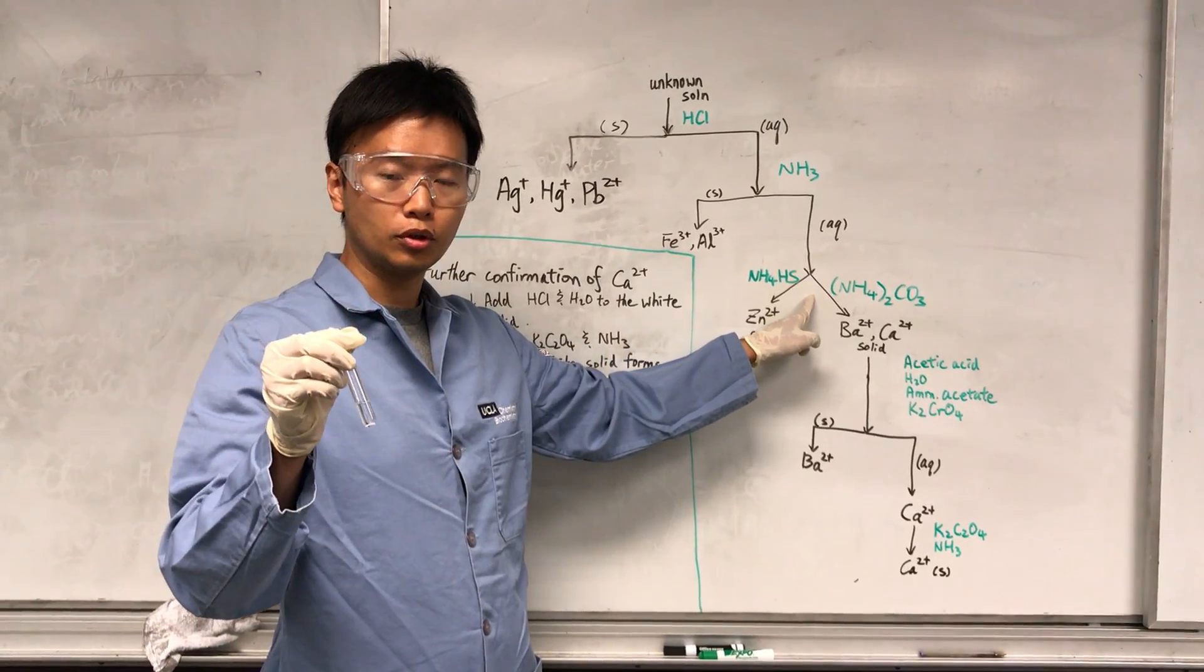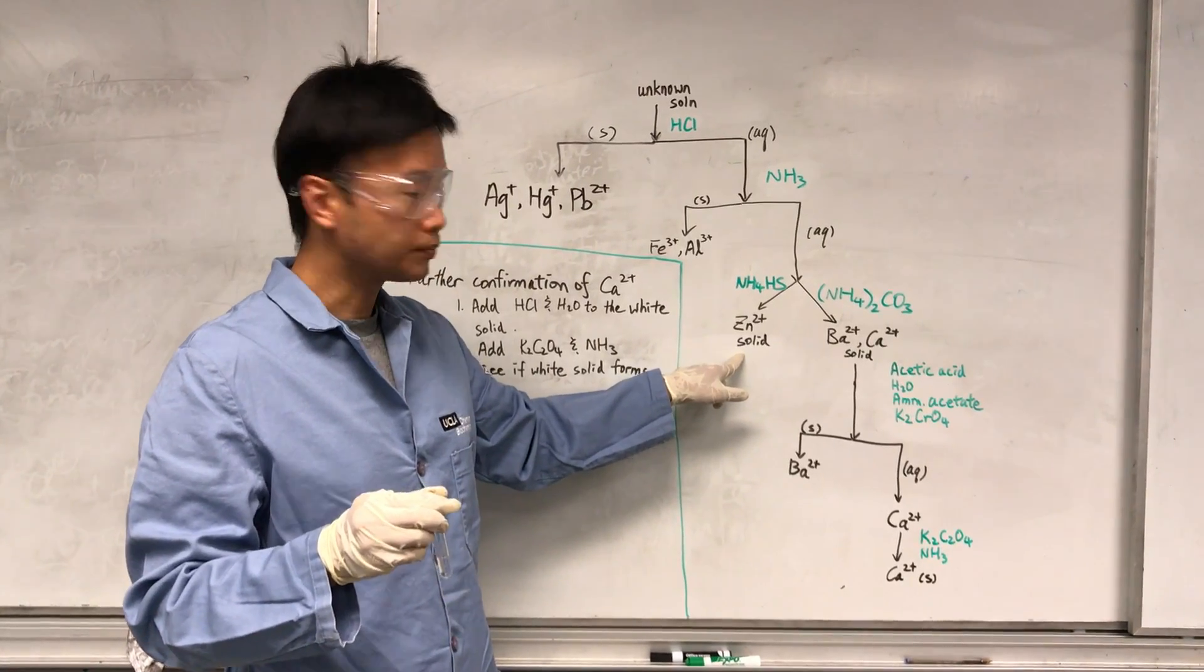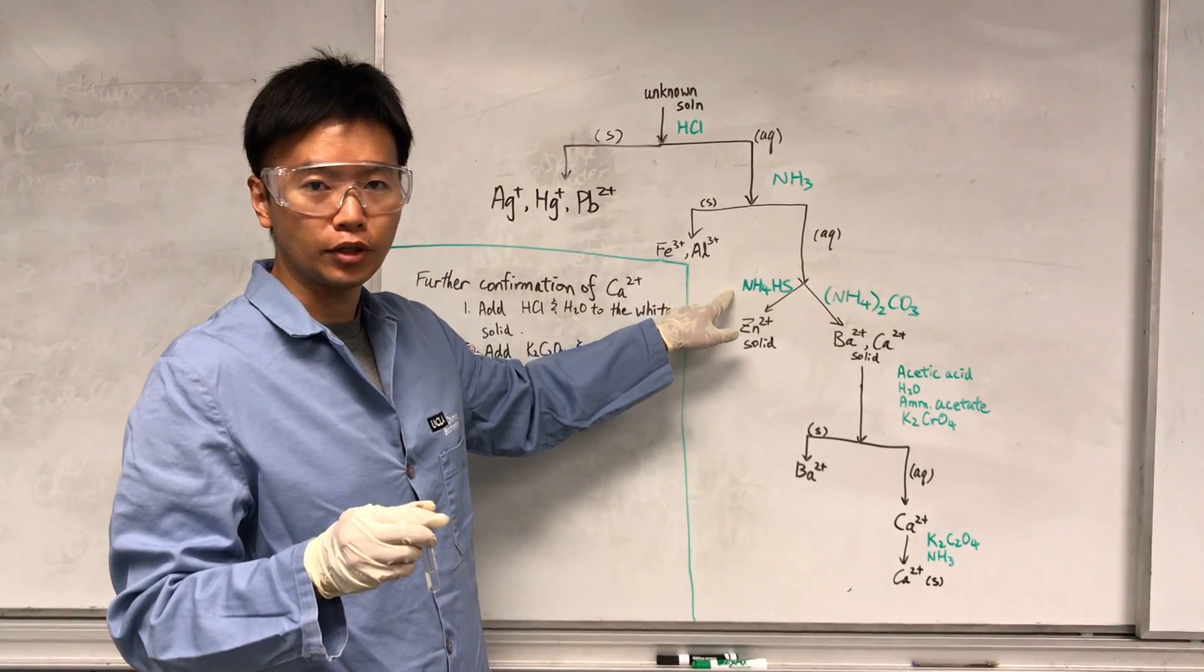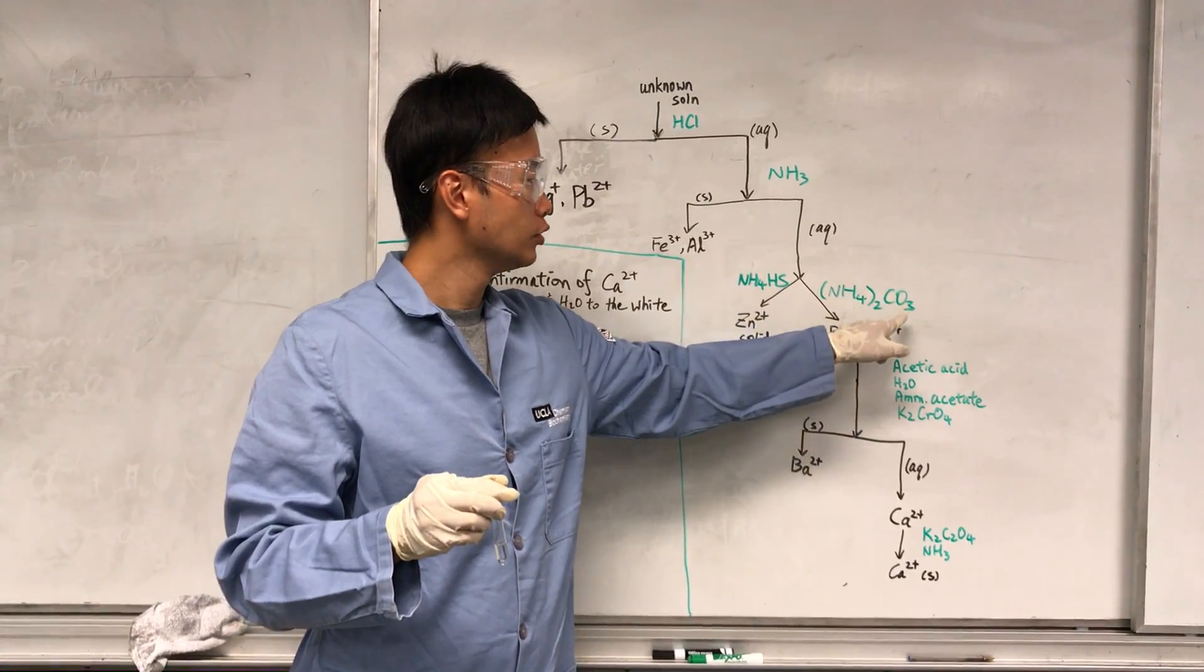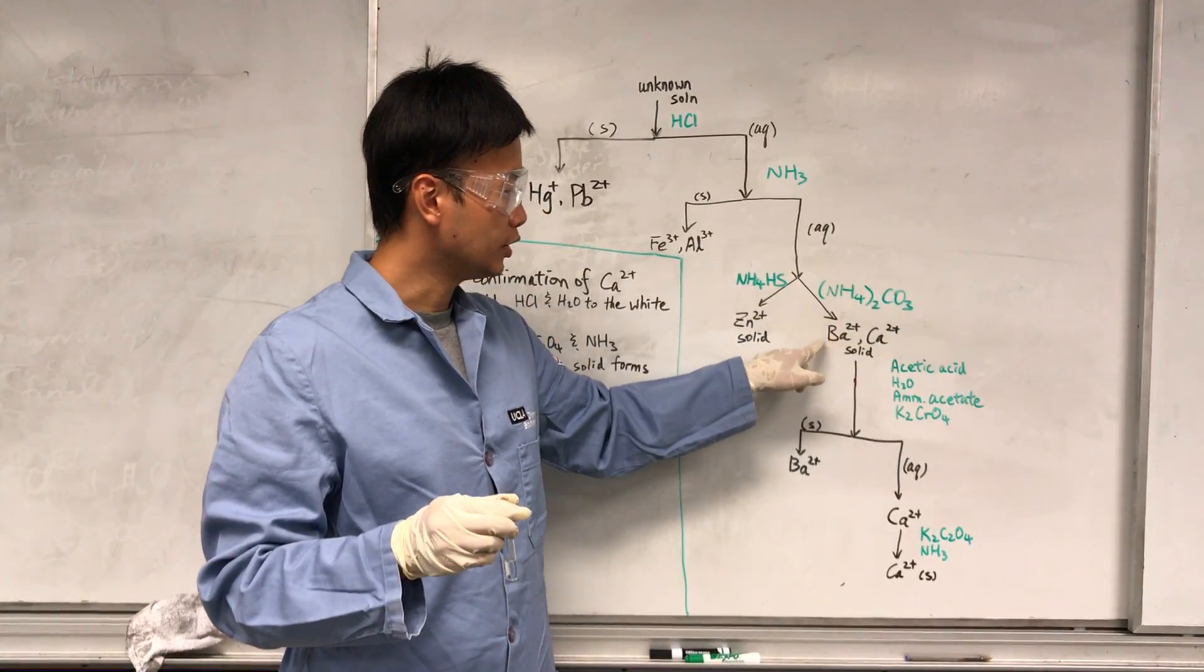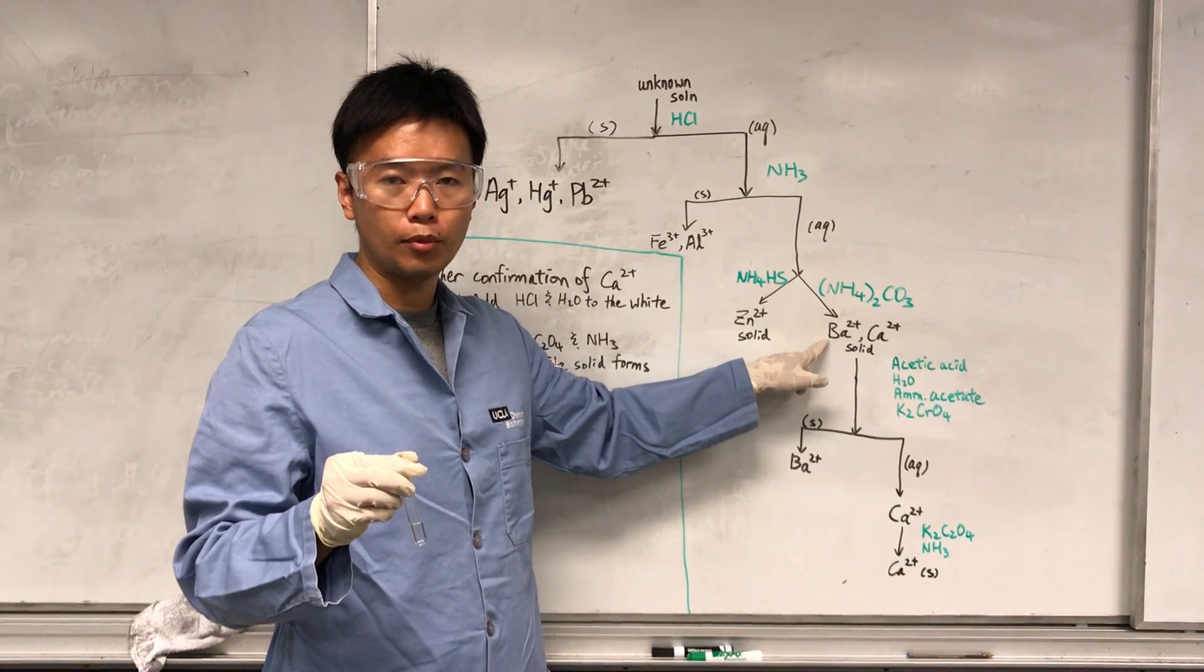In that case, I will split the solution into two portions. One portion I'm going to test for zinc by adding NH4HS, and the other portion I'm going to add (NH4)2CO3 to see if there's any solid form. If there's any solid form, then it indicates I may have barium or calcium.